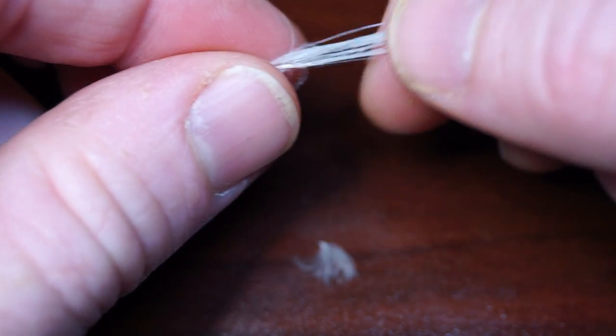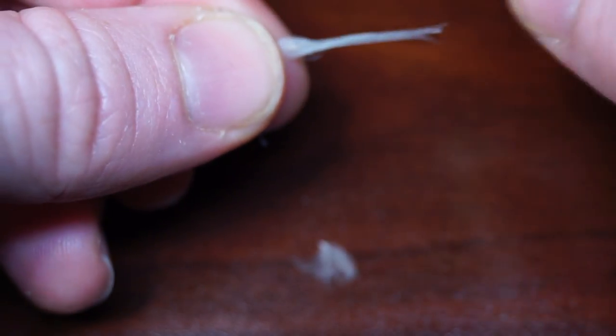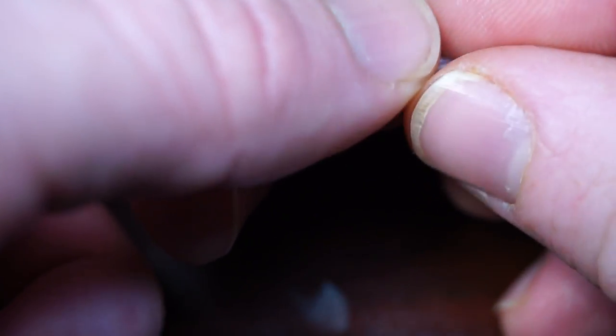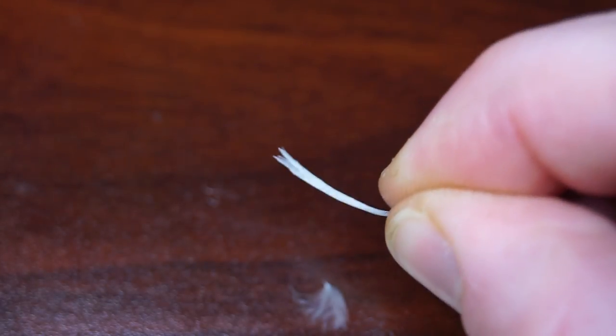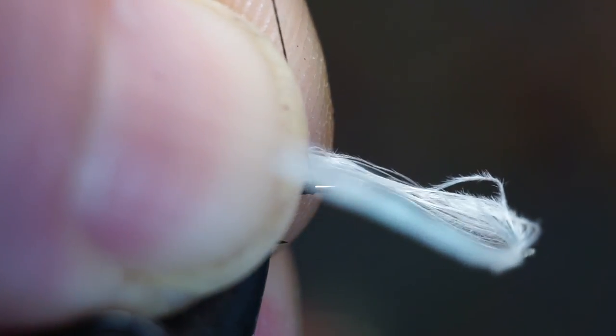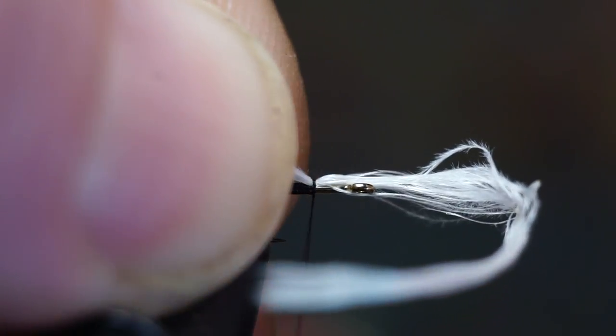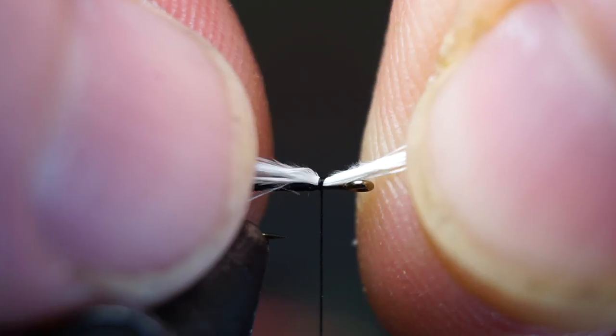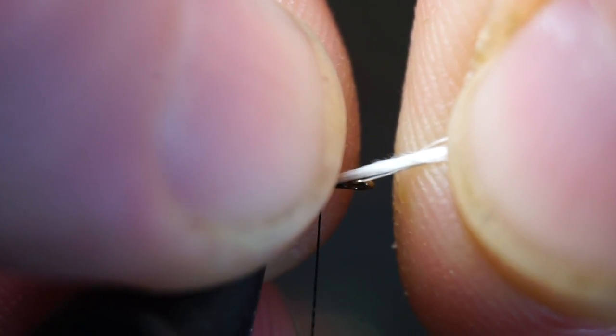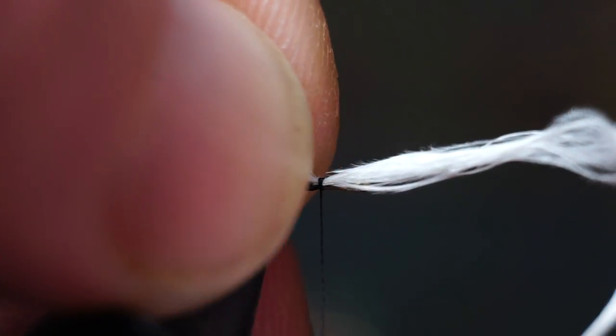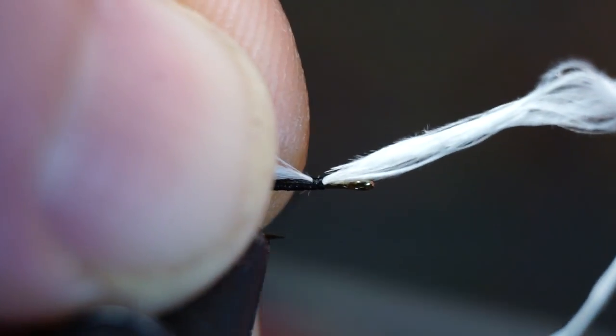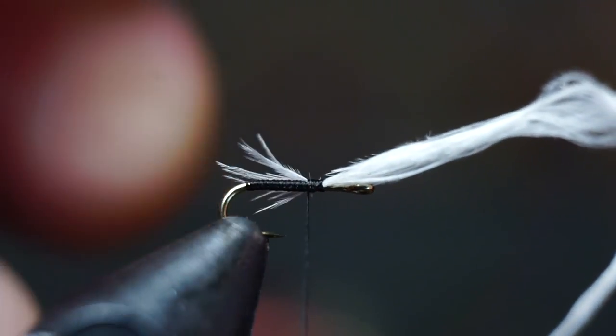Once split, grab just one side of the puff and tie it on top of your hook with a pinch trap. Then you can pull it back a little so the wing is about as long as the body. This will allow you to tie three to four of these flies with one side of a single CDC puff.